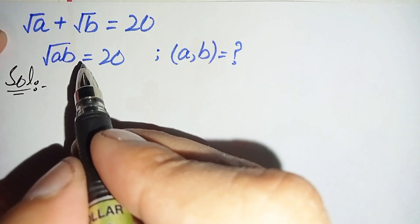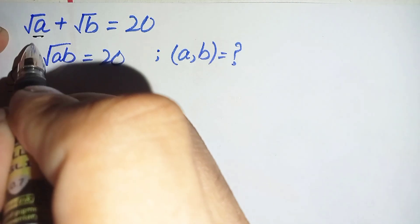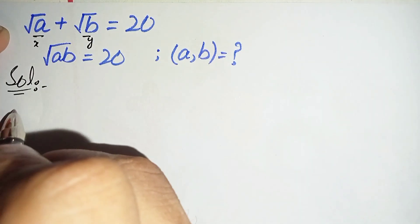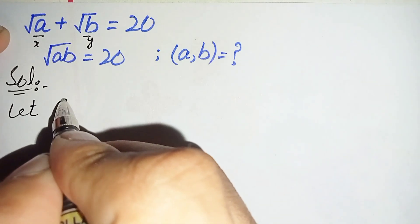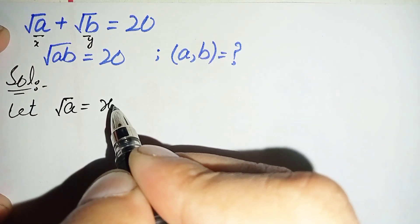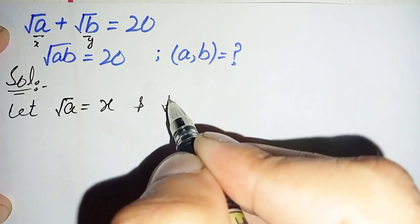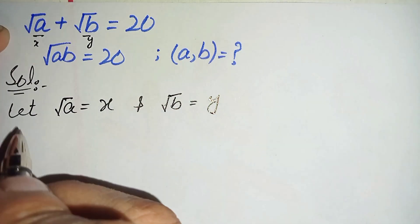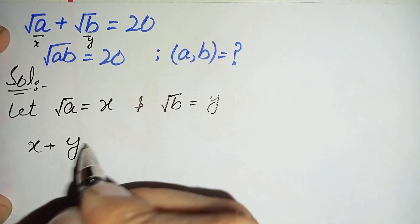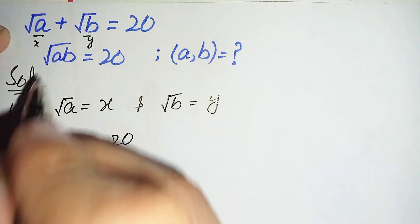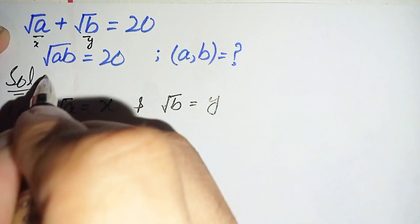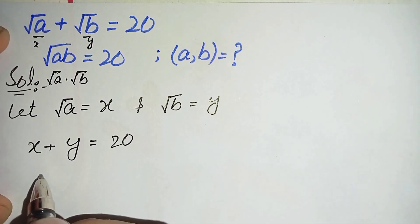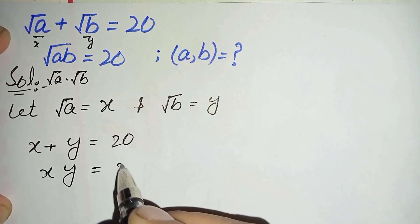Let us suppose square root of a is equal to x and square root of b is equal to y. So the first equation will become x plus y is equal to 20, and the second equation will become square root of a times square root of b, which is x times y, is equal to 20.